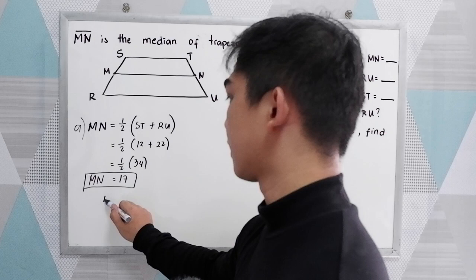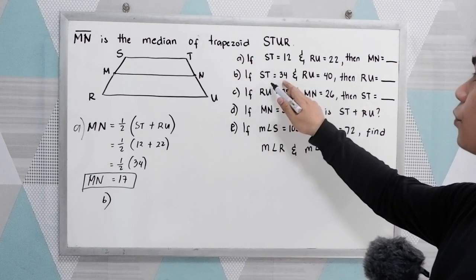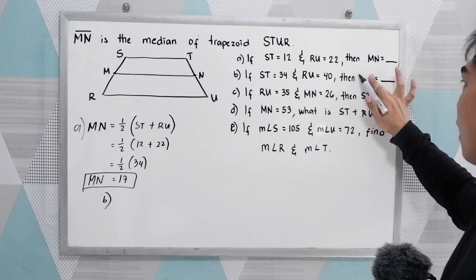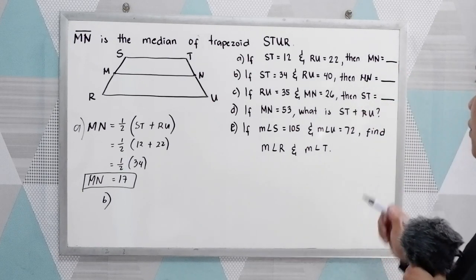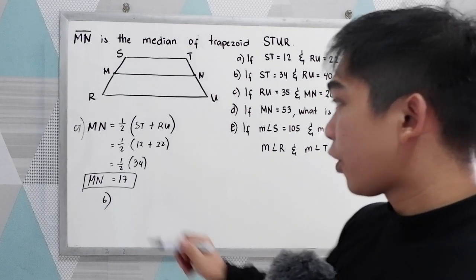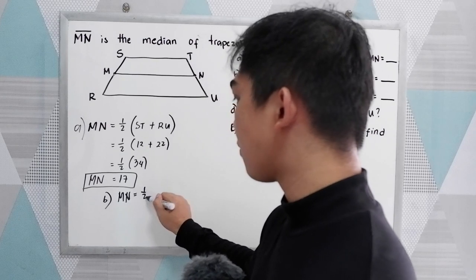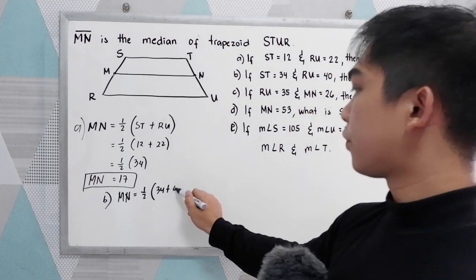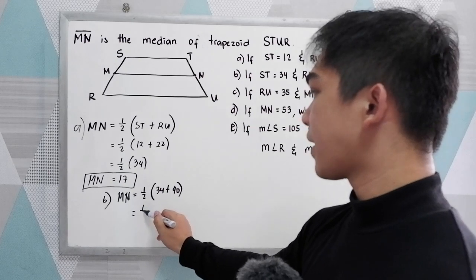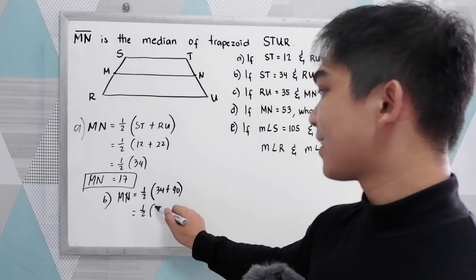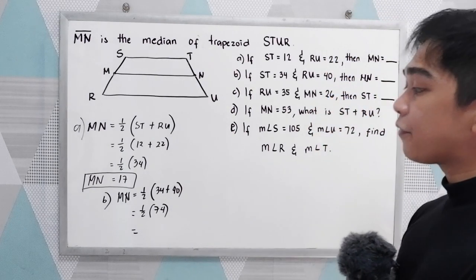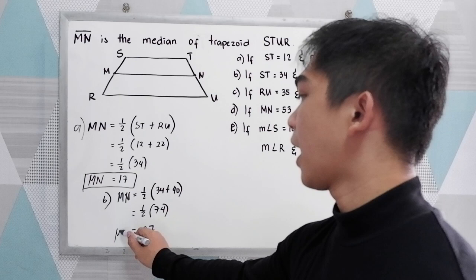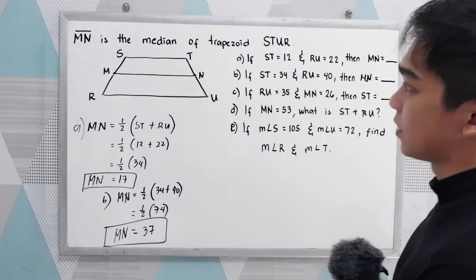Now, letter B. If ST is equal to 34 and RU is equal to 40, then MN is equal to what? Using the same formula, MN is equal to one-half of ST plus RU — that is one-half of 34 plus 40, which equals 74. One-half of 74 is 37. So MN is 37 units.